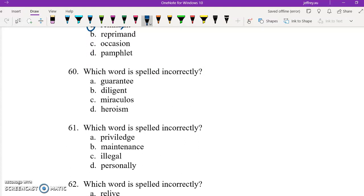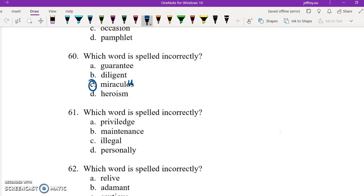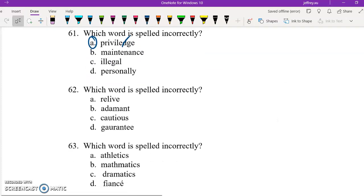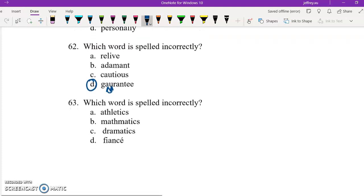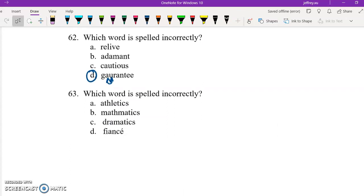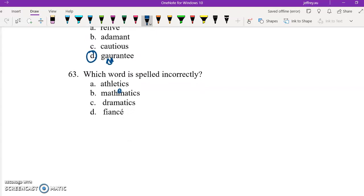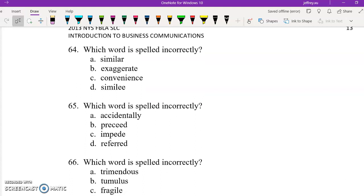Question 60, there should be a U between the O and the S in miraculous. C is your correct answer. 61, there is no D in between the E and the G. So A is the correct answer. 62, the A and the U should be switched around. So UA instead of AU. So D is your correct answer. 63, mathematics should have an E between the H and the M. So B is your correct answer. 64, there's only one E in simile. So D is your correct answer.